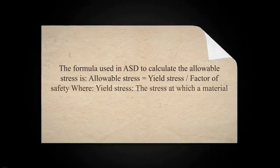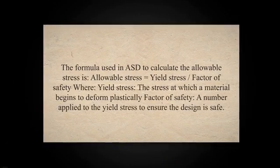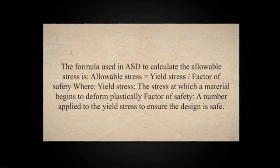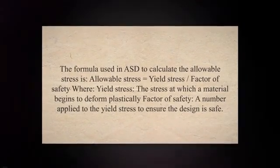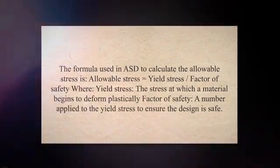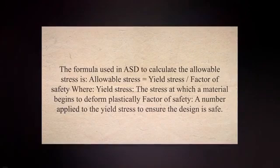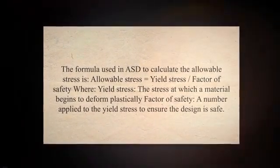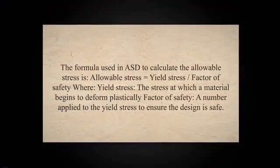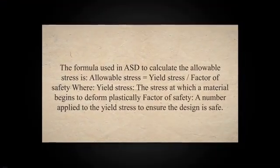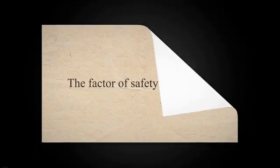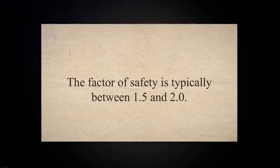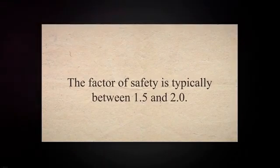The formula used in ASD to calculate the allowable stress is: allowable stress equals yield stress divided by the factor of safety. Yield stress is the stress at which a material begins to deform plastically. The factor of safety is a number applied to the yield stress to ensure the design is safe, and is typically between 1.5 and 2.0.